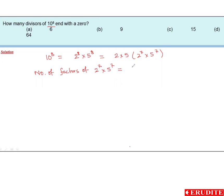...would be equal to 8 into 8, that is 64. So all these factors multiplied by a 10 would have a 0 at the end. So the correct answer is option D. Thank you.